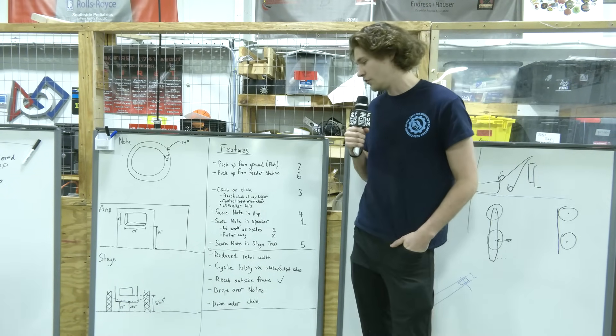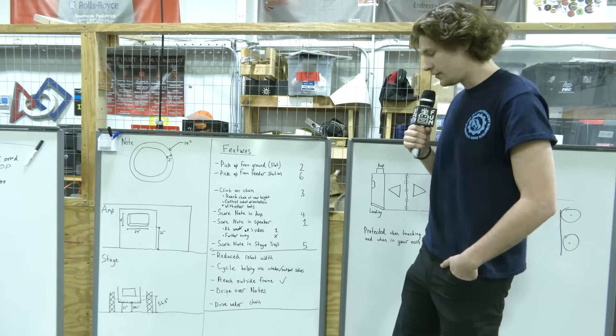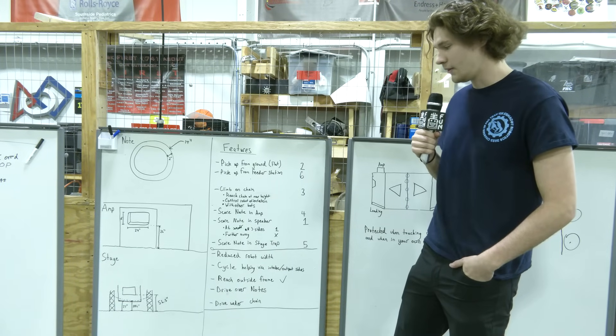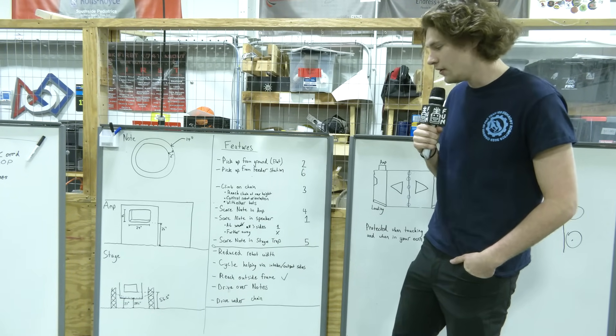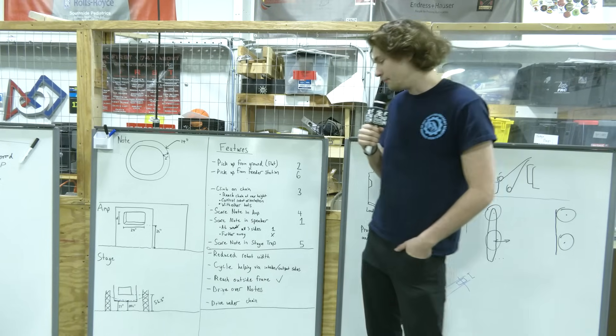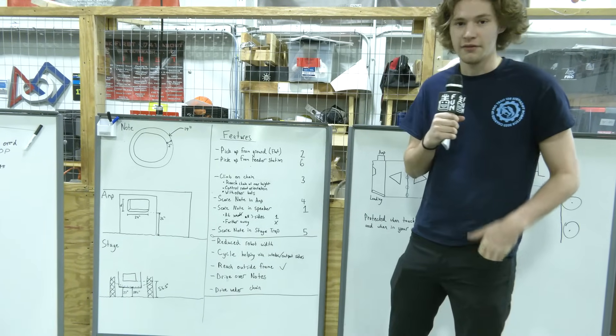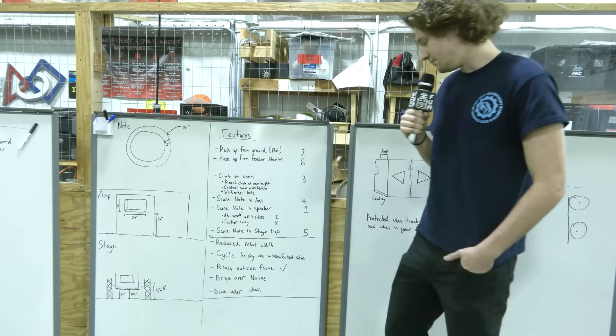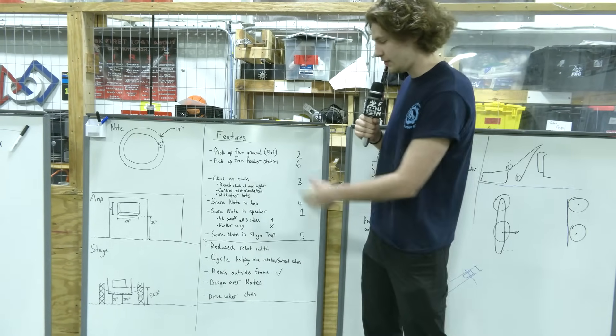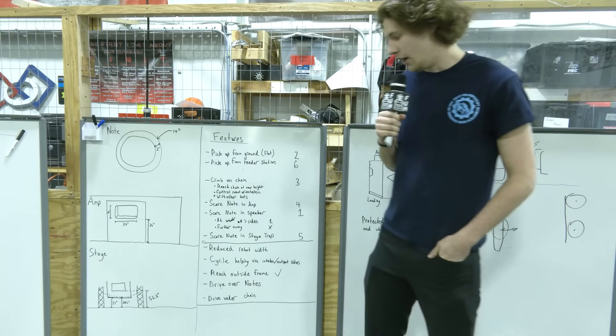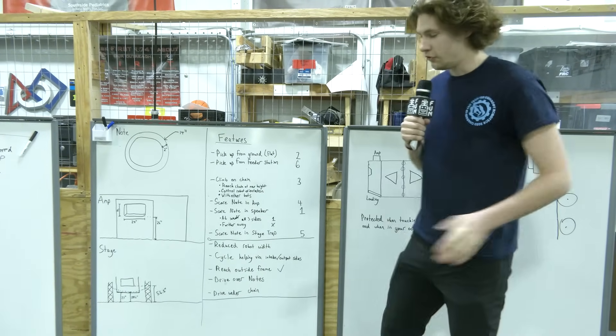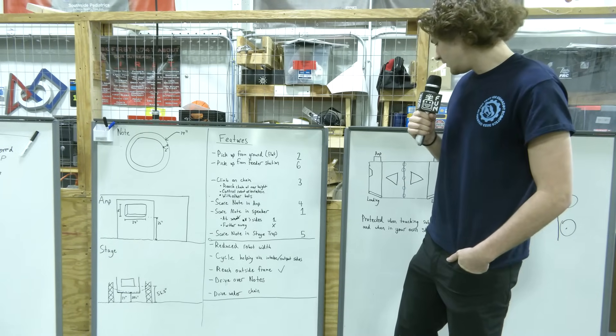And then driving under a chain. This is going to be a really hard design challenge to consider because you're going to be limited to about 27 inches, probably 26 and a half. You want to give yourself some room. And this will allow you to basically drive through the center, the stage zone unimpeded. All you got to do is make your way around the trusses.